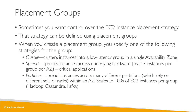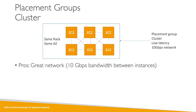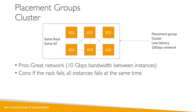For cluster, all our EC2 instances are on the same rack — same hardware — and in the same availability zone. Why would we do this? We place them on the same rack because we want super low latency and maybe a 10 gigabytes per second network speed, giving us an amazing network. But as a drawback, if the rack fails — if there's a failure on the hardware — then all the EC2 instances will fail at the same time, increasing the risk of a failure propagating across our entire stack.